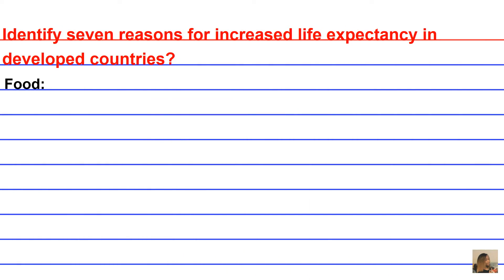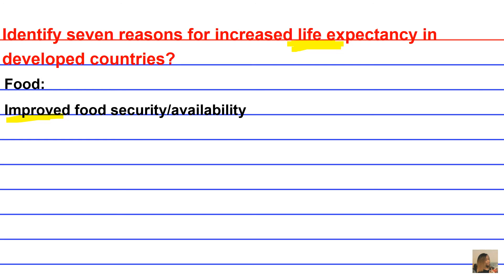A third area would be food. Improved and available food increases the life expectancy of a population. There are a lot of organic brands, non-genetically modified brands, and more than ever there are fewer food shortages — food is more readily available to be consumed.